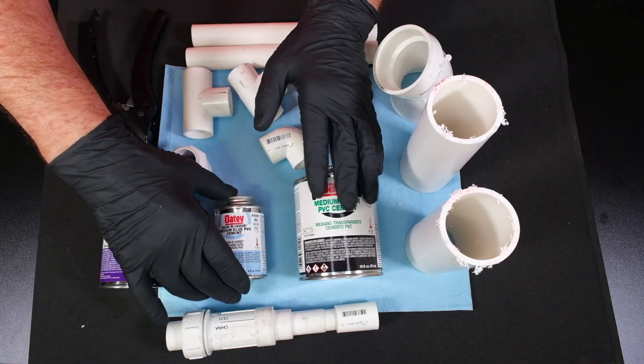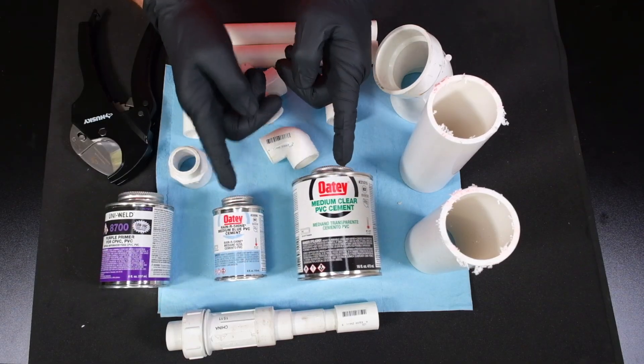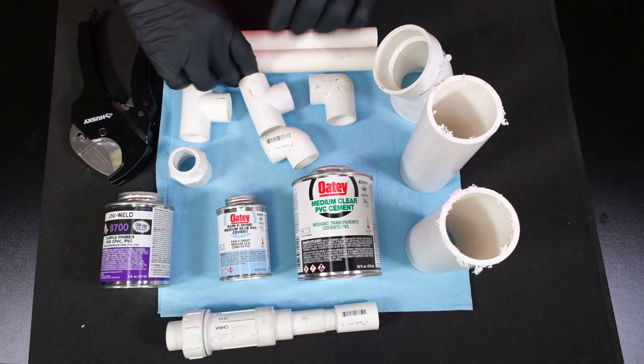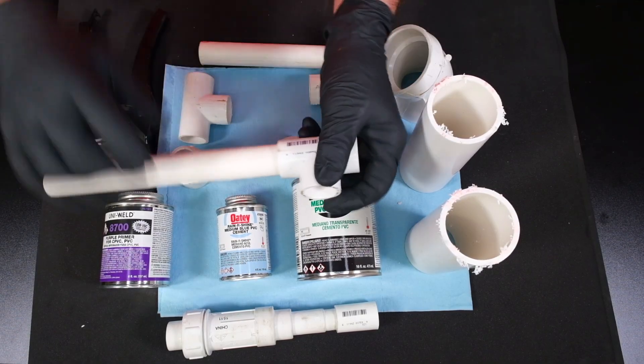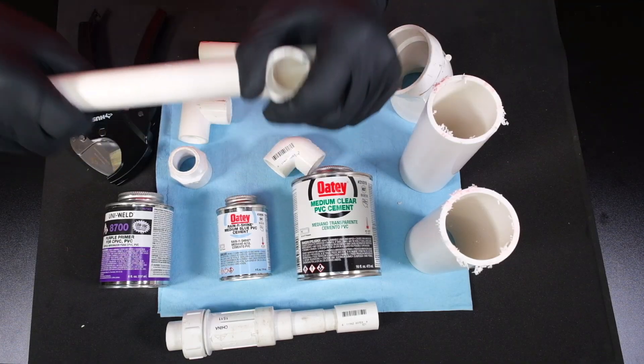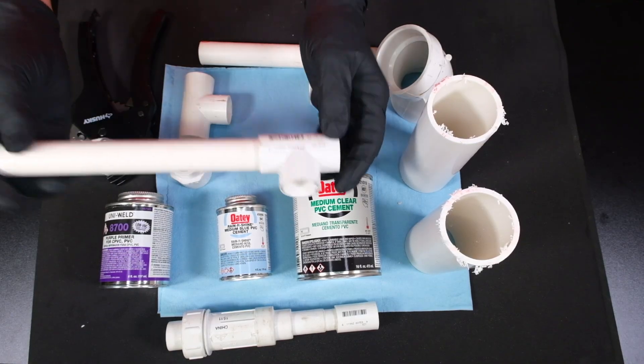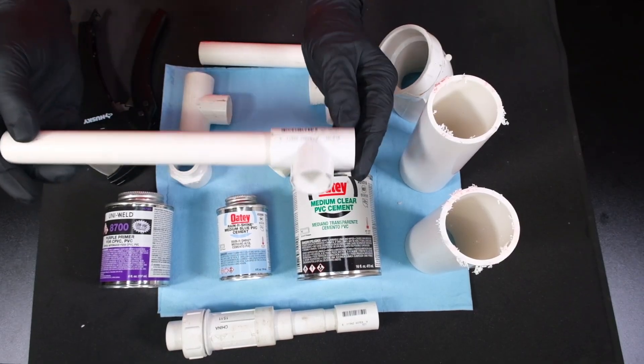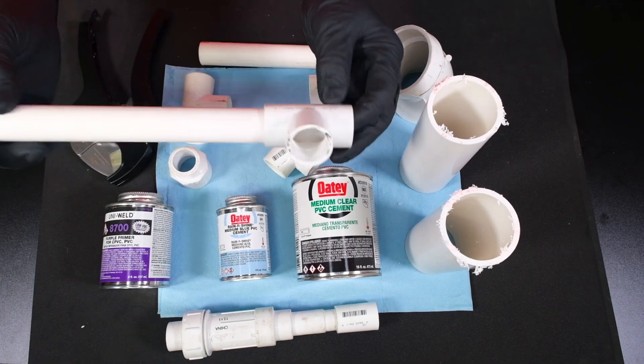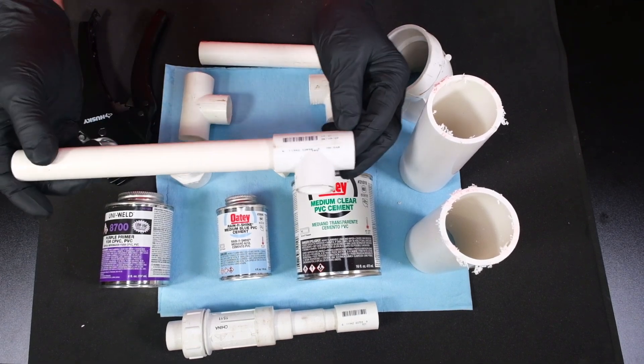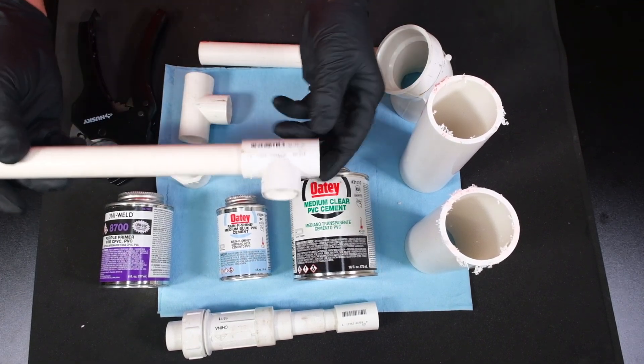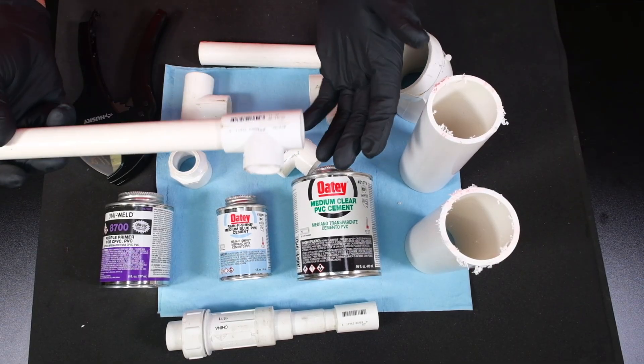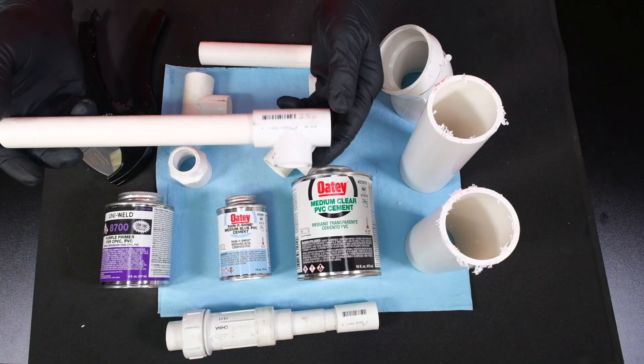My experience has been most PVC solvent weld cements take a minimum of several hours to set up and cure for standard water pressure. Now this glue and this glue say the exact same things on the back. They say hold together for 30 seconds. In 15 minutes, it's ready for handling. And it's not ready for pressure for at least two hours if it's above 60 degrees. If it's lower than 60 degrees, it's going to take longer. If it's 110 degrees outside, it's going to set up faster.